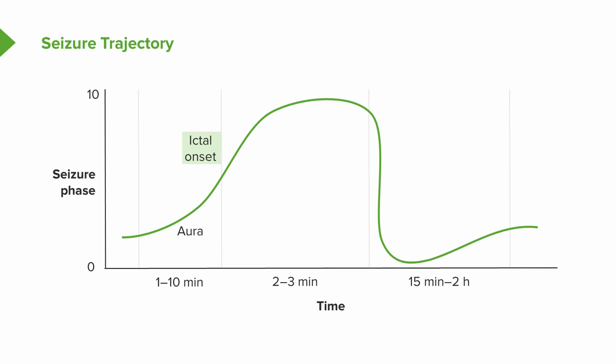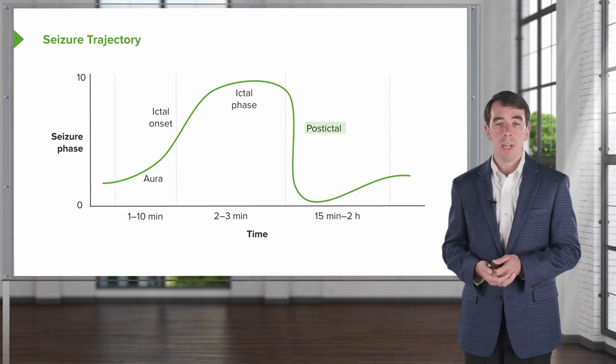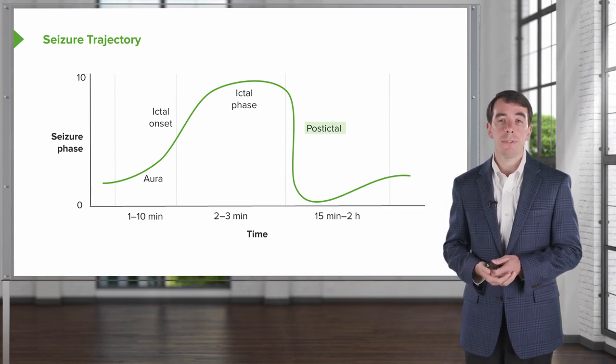Then there's the ictal onset, when the seizure is driving that area of brain and patients have manifestations of the actual seizure semiology. This is followed by the ictal phase — classically a period of jerking, tonic or tonic-clonic activity — though the ictal phase can take on the appearance of any part of behavior or brain. Then comes the post-ictal phase, where there's depression of brain activity; patients are very confused and sleepy for 15 minutes to up to two hours.